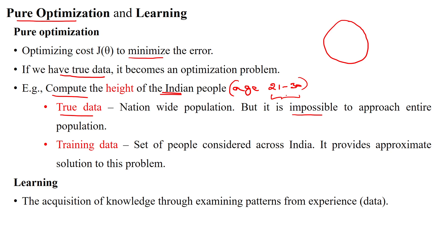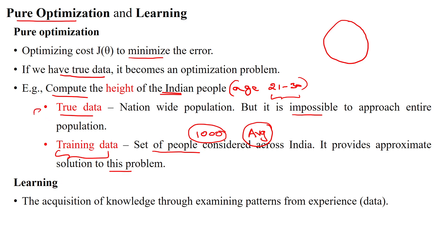To avoid this issue, we take a set of people across India — district-wise, taluk-wise, or panchayat-wise — as samples. For example, a thousand people per district are collected for the dataset. This gives an approximate solution: we take the average of all samples across India to get a solution close to the actual solution. This data is called training data. We should know the difference between true data and training data to understand empirical risk.